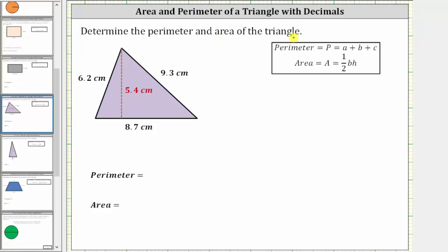Determine the perimeter and area of the given triangle. Let's begin with the perimeter. The perimeter is a distance around the outside of the triangle.